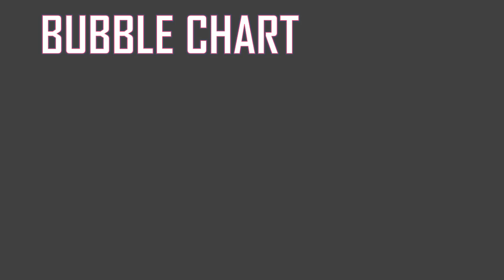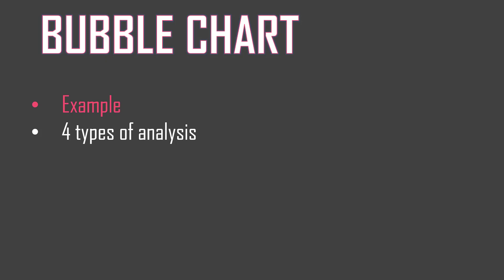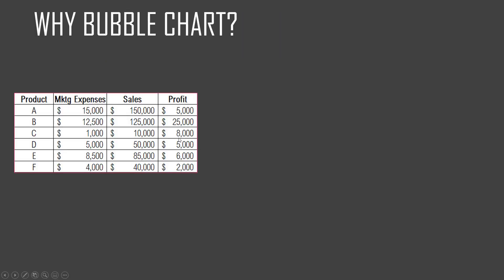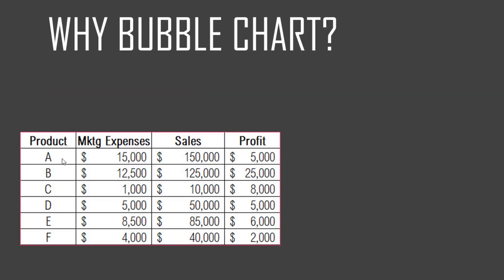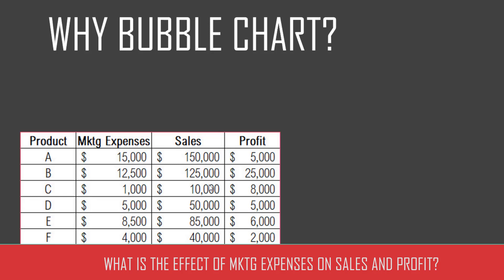In this video we will see an example of how the bubble chart can be an effective data analysis and data visualization technique, and then I will walk through four types of analysis that we can do with bubble charts. Here is a simple dataset where we have six different products — for each product, how much marketing expenses we had, how much sales those products brought in, and how much profit they made for the company. With this data, if we are asked to explain the relationship between the expenses and the sales, or expenses and the profit, or all three together, how can we do that effectively and quickly?